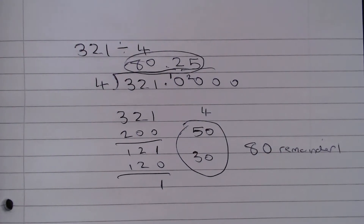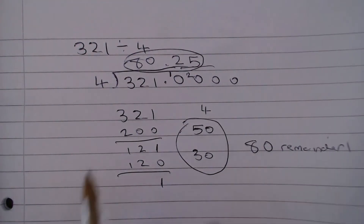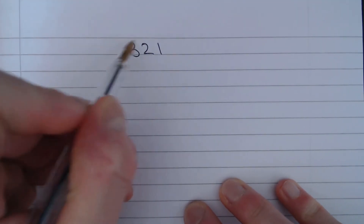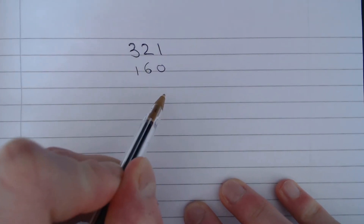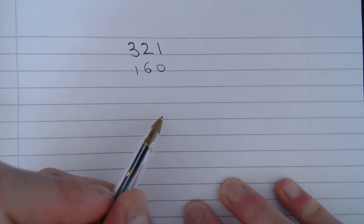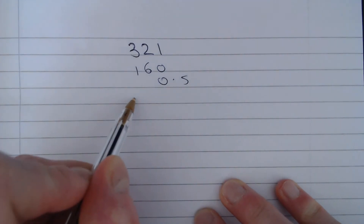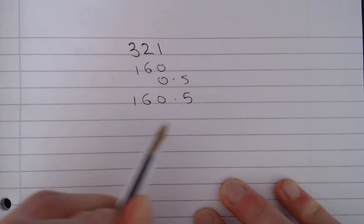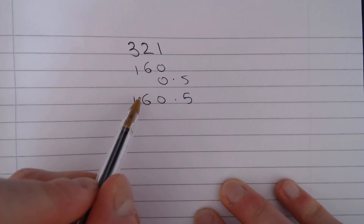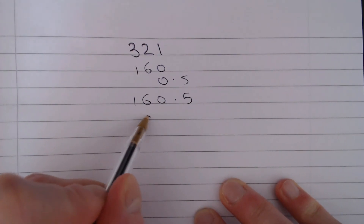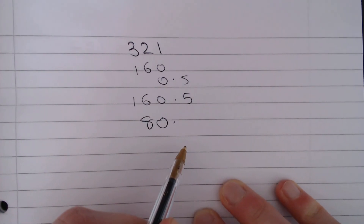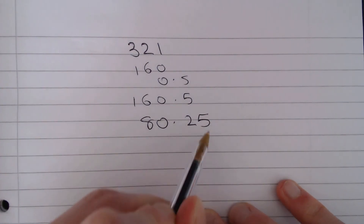There is a slightly quicker way of doing this. We can recognise that dividing by 4 is the same as dividing by 2 twice. So 321 divided by 2 — the 320 divides to 160, and the 1 divides by 2 into 0.5 — giving us 160.5. Dividing by 2 again gives us our answer of 80.25.